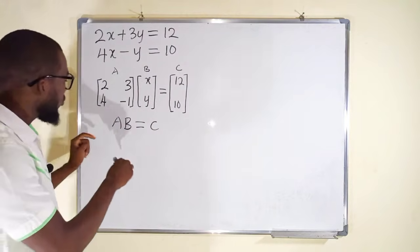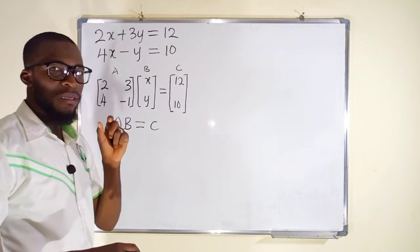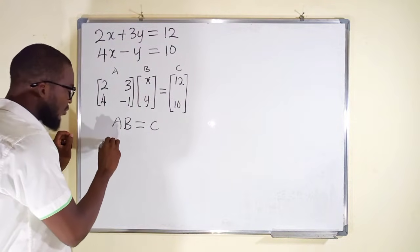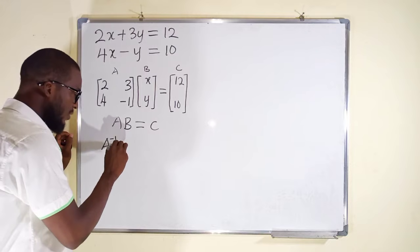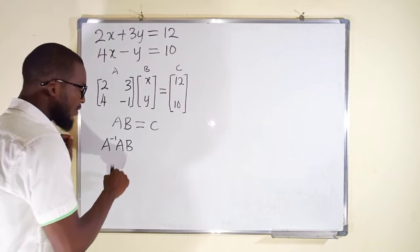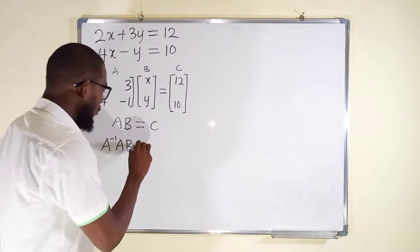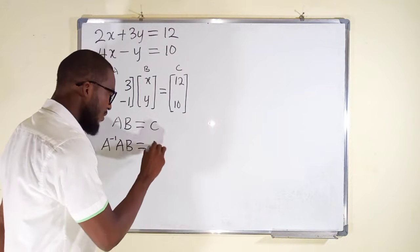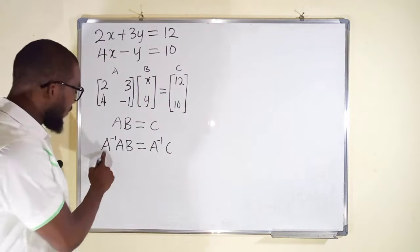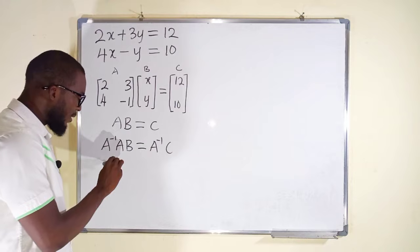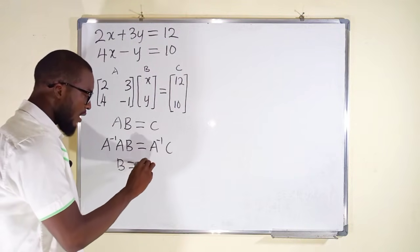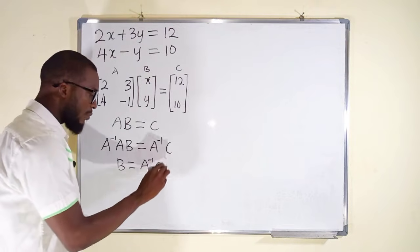To do so, we are going to multiply both sides by the inverse of matrix A. Because the inverse of a matrix multiplied by the original matrix is nothing but an identity. An identity multiplying any matrix will not change the matrix. So we are going to multiply both sides by A inverse. This will eliminate A entirely, leaving B.